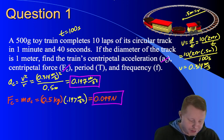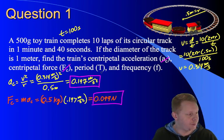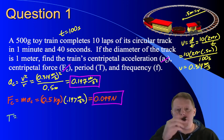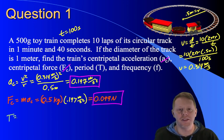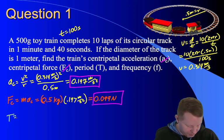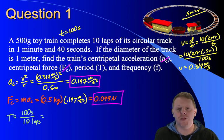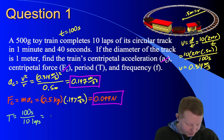Now we come to period. Calculate the period. Well, period is the time it takes for one complete revolution, one complete cycle. And if we do 10 laps in 100 seconds, it takes us 100 seconds for 10 laps or 10 revolutions. So our time for one revolution, one lap, is just 10 seconds.